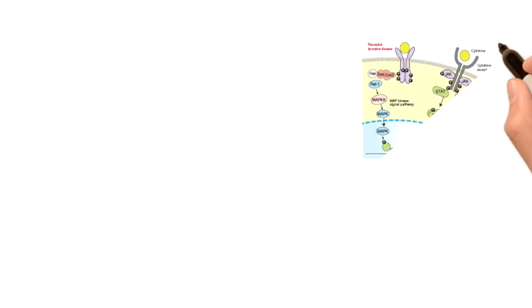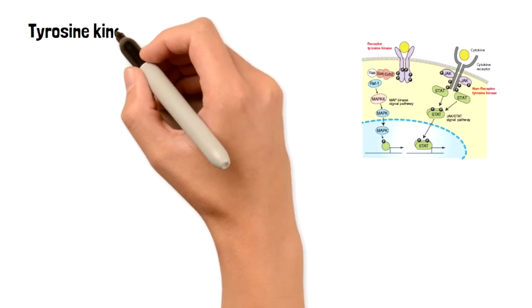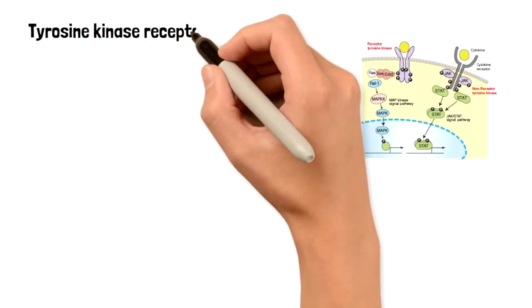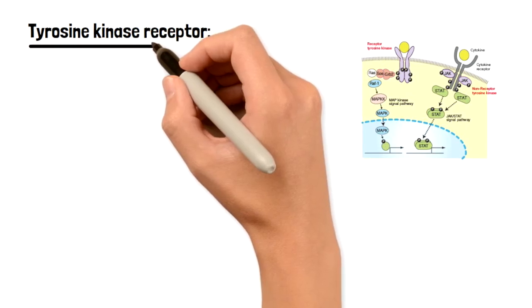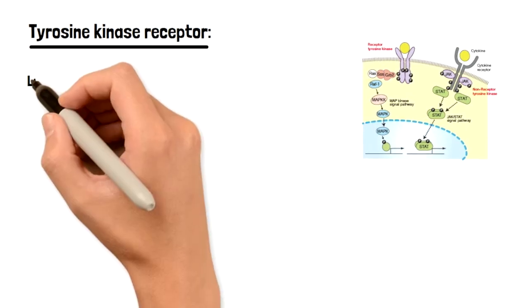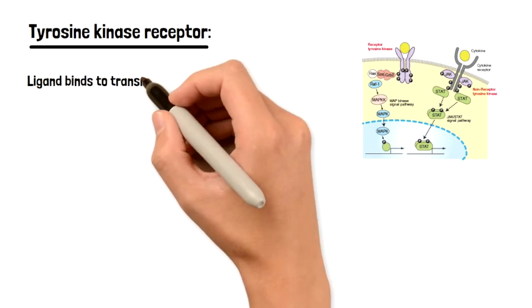So first let's talk about tyrosine kinase receptors. As we talk about each step, you can look at the image, and on the image it's the picture that's on the left side. In the first step, the ligand is going to bind to that receptor, and this receptor is a transmembrane receptor on the cell membrane.